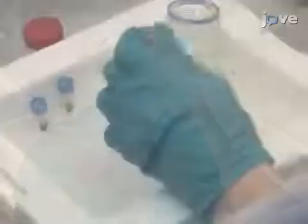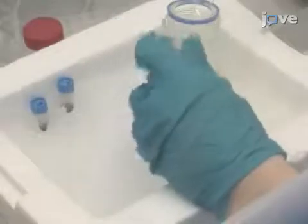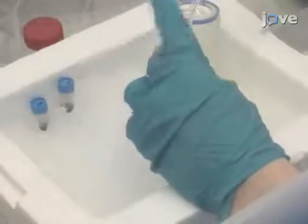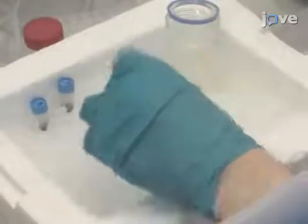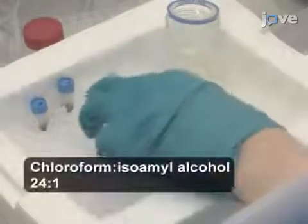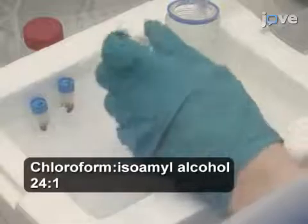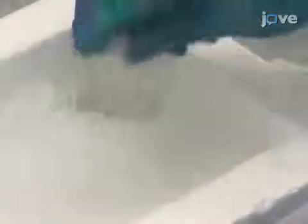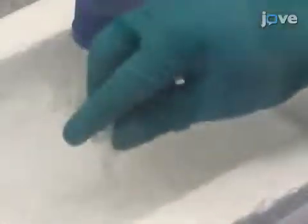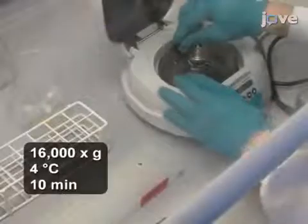Next, place the samples on ice and add 500 microliters of ice-cold chloroform isoamyl alcohol. Then invert the tube several times until an emulsion is visible and centrifuge as before.